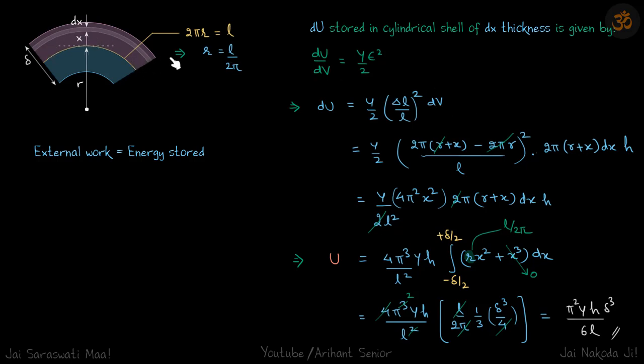So dV for the cylindrical shell will be 2π into (r plus x), so yeah here x we have taken from the middle point, so you will see later why. So that will be the volume will be the area of this ring times h, so area of the ring will be 2π(r plus x)dx into h.